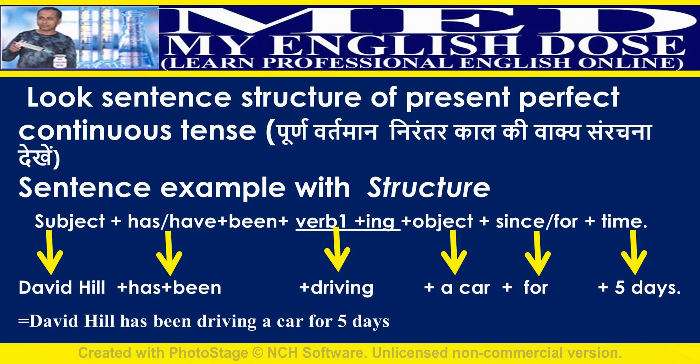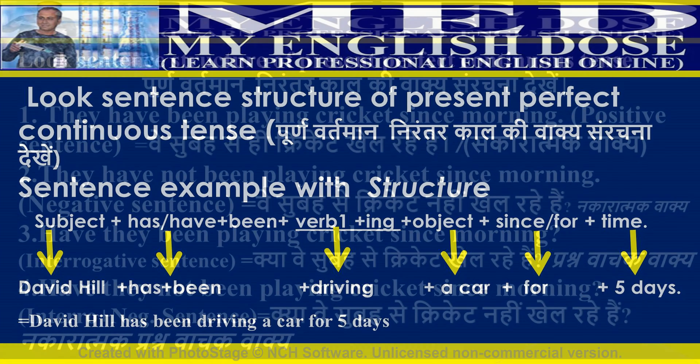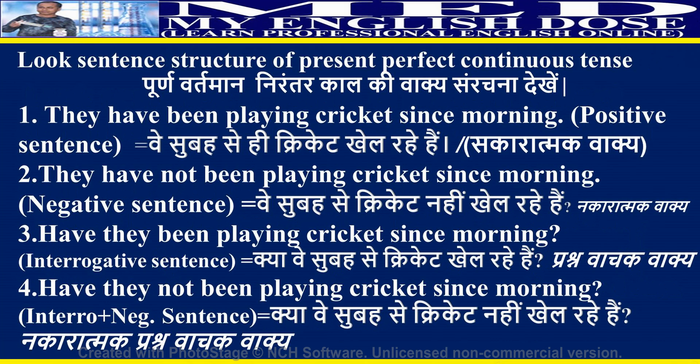In the given sentence, David Hill is the subject, 'has been' is the helping verb, 'driving' is the verb, 'a car' is the object, and 'for five days' indicates a period of time. Examples: They have been playing cricket since morning (positive). They have not been playing cricket since morning (negative). Have they been playing cricket since morning? (interrogative). Have they not been playing cricket since morning? (interrogative negative).